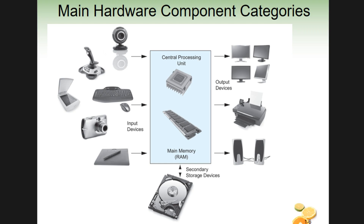Traditional input devices include the keyboard — you type things in and they're sent into the computer. Output devices include printers and monitors. Some devices are both input and output, like the Wacom Cintiq tablet, which looks like a monitor but also accepts stylus input. It's great for graphic artists or photo editing in Photoshop, since you can work directly on the screen.